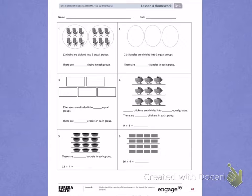Number 1. Twelve chairs are divided into two equal groups. There are blank chairs in each group. I can count to see how many chairs there are in each group. That will be my unknown. 1, 2, 3, 4, 5, 6. There are six chairs in group 1.